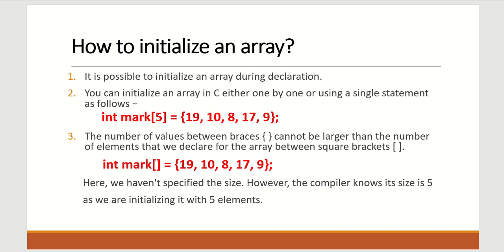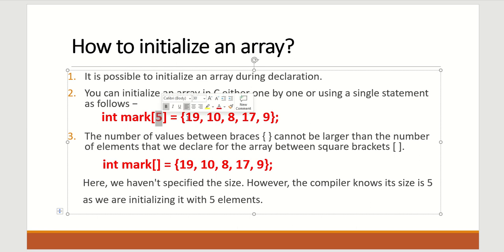The number of values in the curly brackets cannot be larger than the number of elements declared in the square brackets. If you write size 5 but initialize 10 different values, that is not possible. There is one more example: we write integer, array name 'mark', but inside the square bracket we write no value. We just write equal-to and the curly bracket values: 19, 10, 8, 17, 9. Here we have not specified the size, but the compiler knows the size is 5 because we are initializing 5 elements — this is also a valid way to initialize.